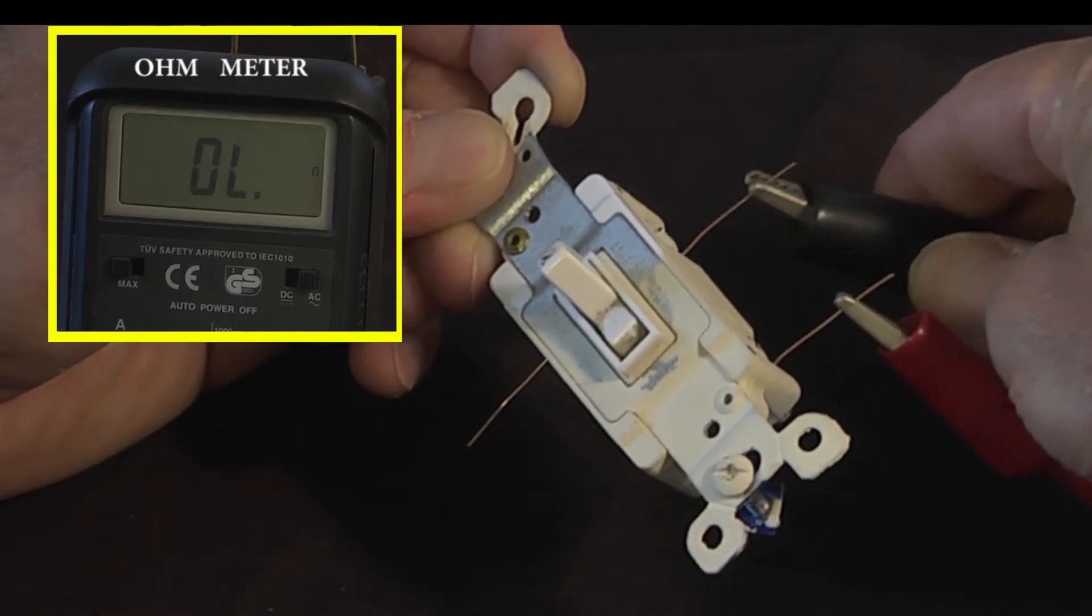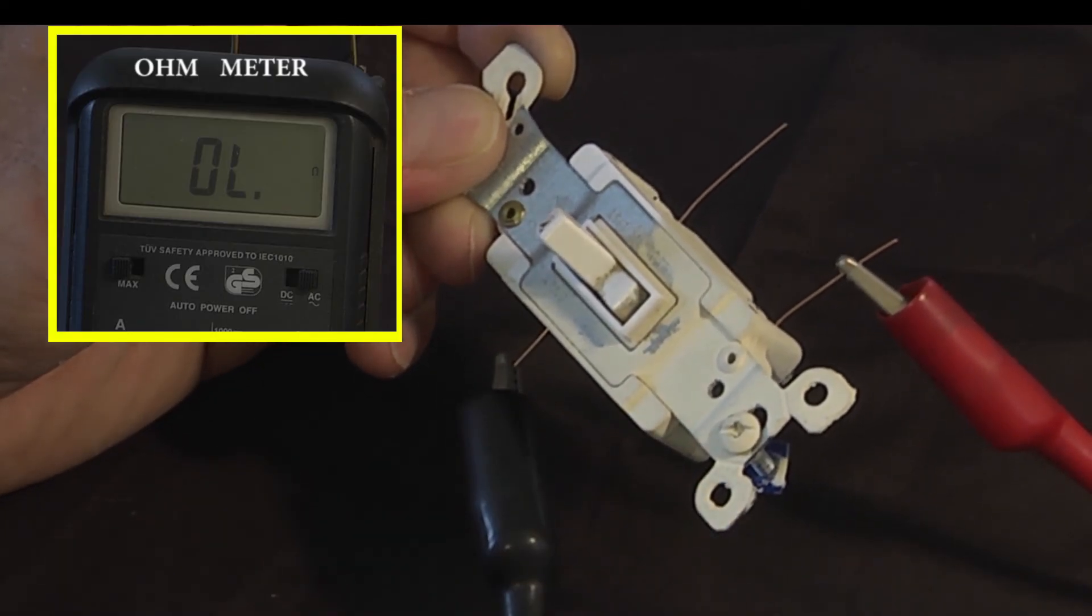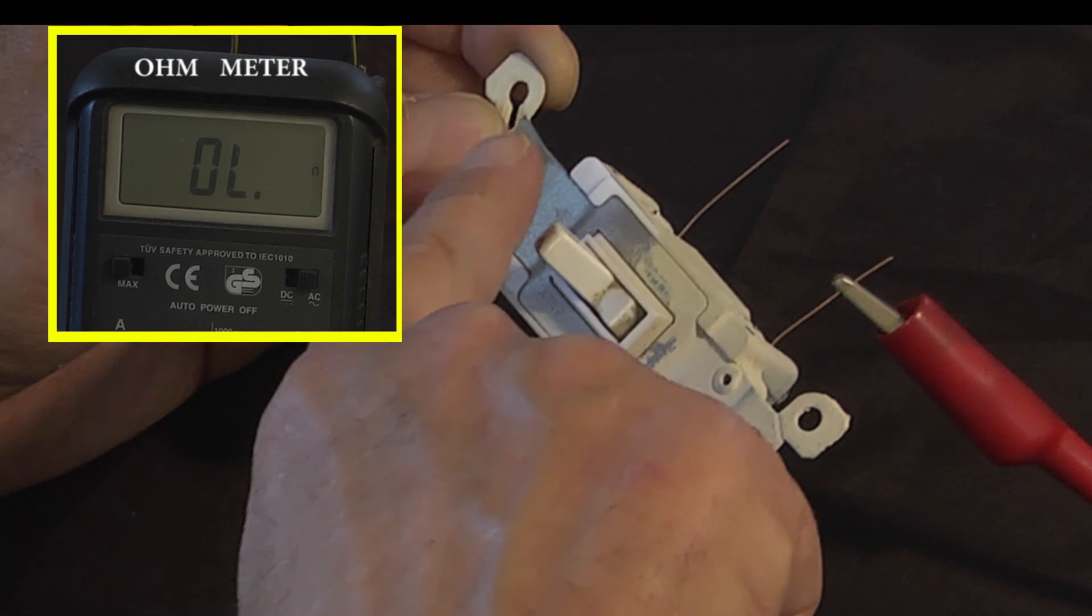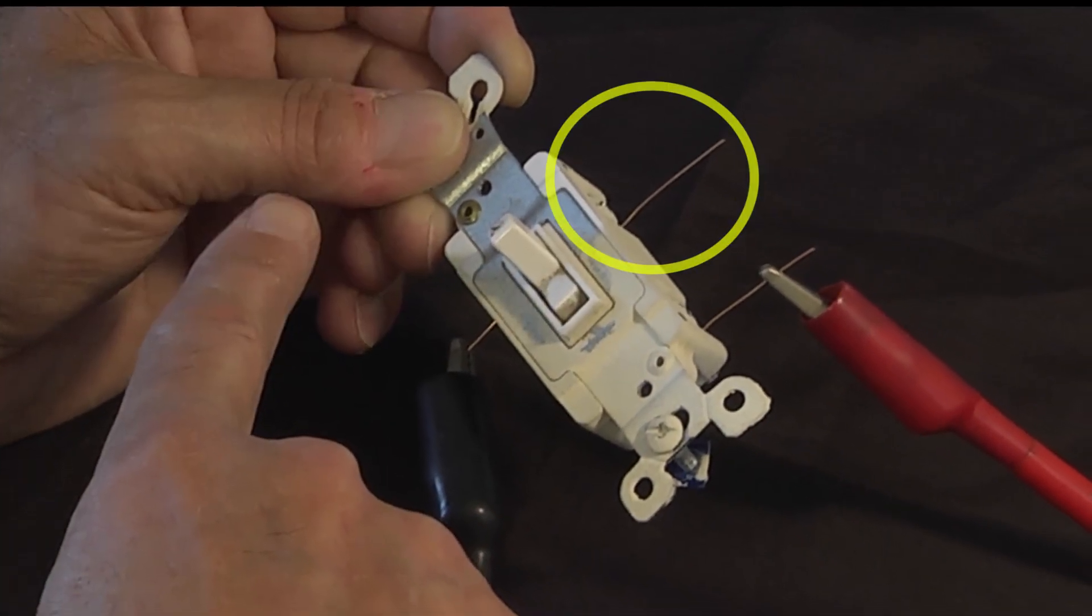Try different configurations, flipping the switch back and forth each time, until you find no continuity regardless of which position the switch is in. The remaining screw without any test lead is your common screw.